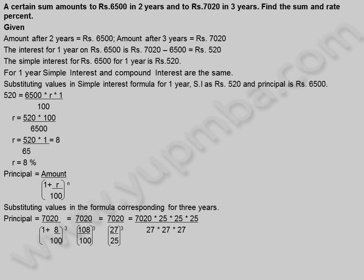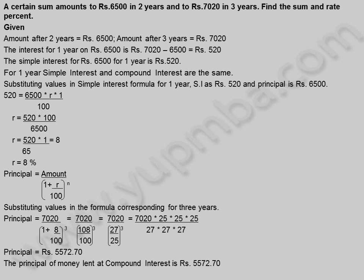Principal = 7,020 / (1 + 8/100)^3 = 7,020 / (108/100)^3 = 7,020 / (27/25)^3 = 7,020 × 25 × 25 × 25 / (27 × 27 × 27) = 5,572.70 rupees. The principal lent at compound interest is 5,572.70 rupees.